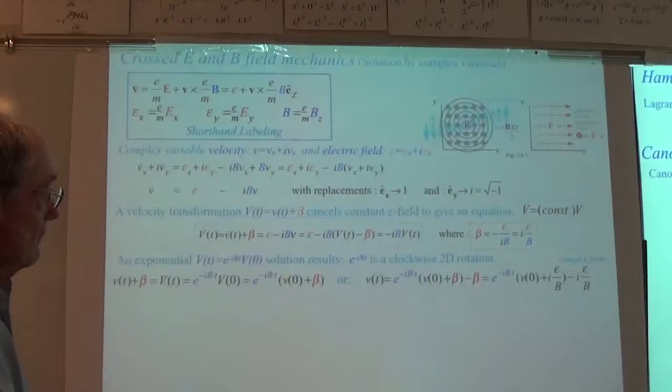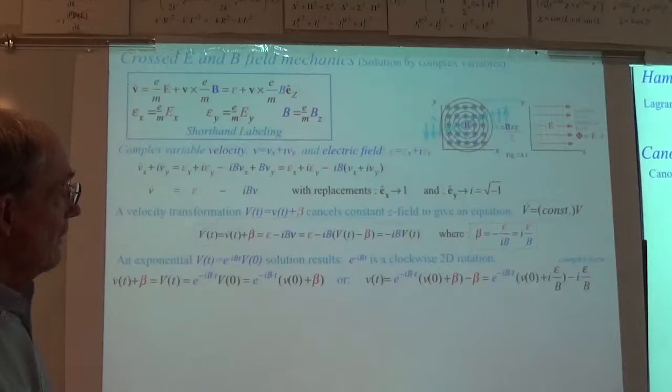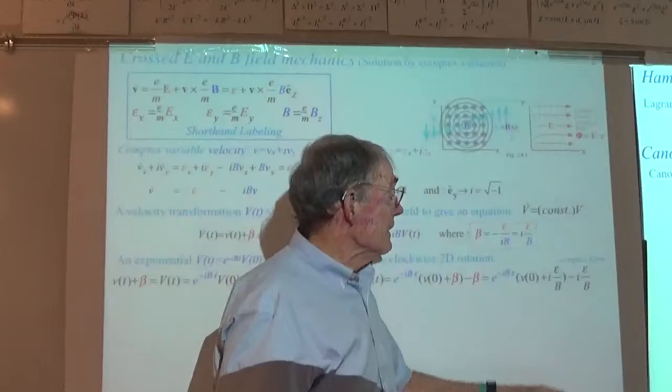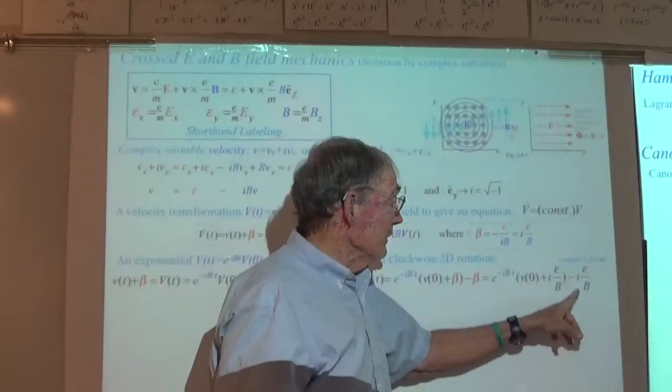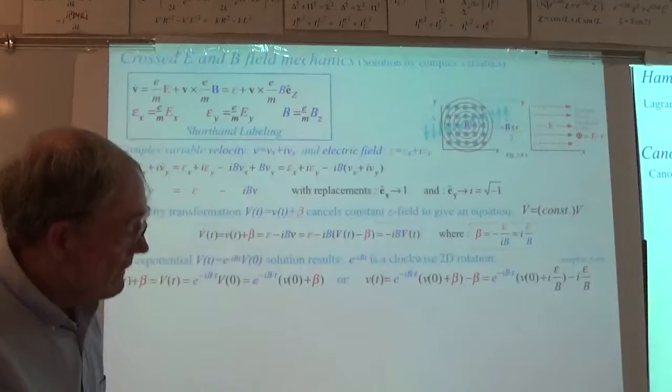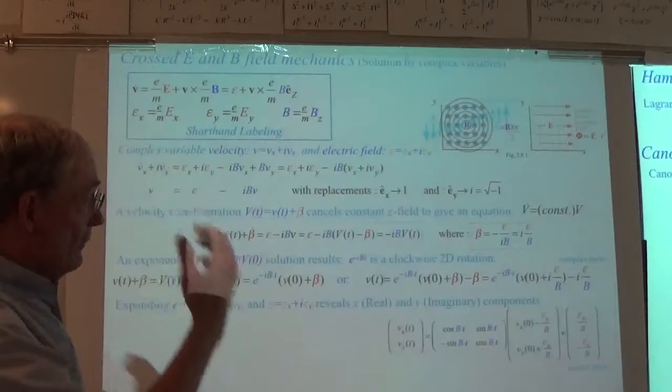So basically if you have an electric field in this direction, this is telling you you're going to be translating in the minus y direction. Turning it back into matrix notation, here's the rotation with a minus sign — so the minus goes on the lower left, making it clockwise as opposed to positive counterclockwise. And then there are two components showing up — the real and imaginary parts become the x and y velocity components.